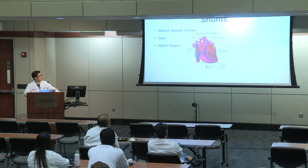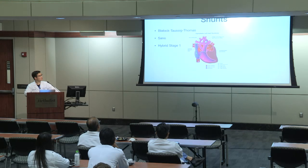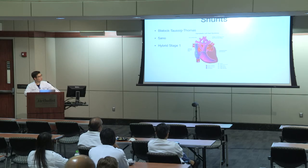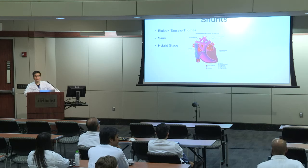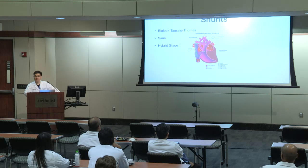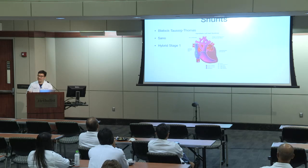A newer concept is the hybrid stage one: instead of any surgery, just stent the PDA. However, we don't want to over-circulate the pulmonary circulation. If all systemic circulation goes through the pulmonary circulation, you flood the lungs and the child can go into heart failure with pulmonary edema. It can also cause persistent elevation of pulmonary vascular resistance, which you definitely want to avoid. That's why in that first week of life you need to get the shunt done — if the PDA goes away without a shunt, the kid will be in big trouble.